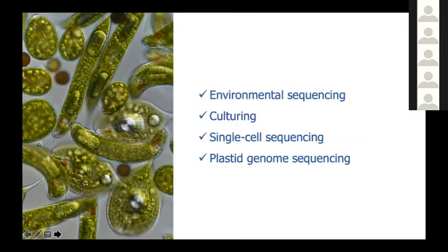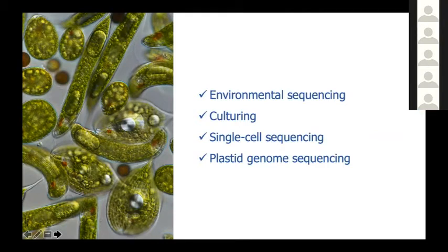To sum up, the future directions to expand our knowledge about diversity and aid taxonomy are: sampling environments and doing both environmental sequencing and obtaining new cultures, and, when it is not possible to obtain or maintain cultures, working with single-cell picking and single-cell sequencing. Also, as an alternative at least until genome sequencing becomes easier, plastid genome sequencing is a useful alternative for phylogenomic analysis.